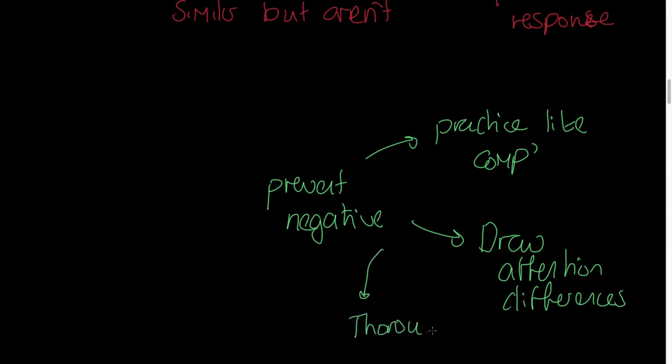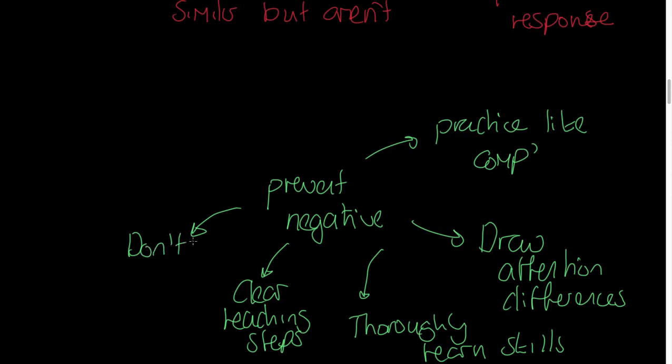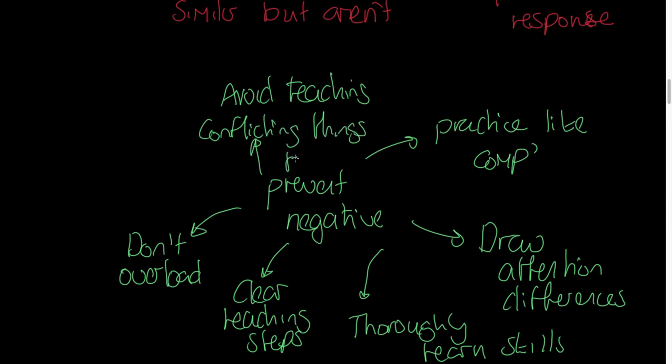We must thoroughly learn skills. There is a tendency in sports coaching that athletes will learn something, not master it, and we move on regardless. What we're saying here is before moving on, master the fundamentals. We also want clear teaching steps so that people can follow the path of progression simply, and it's absolutely clear what those progressions are. We don't overload our athletes. Don't give too much information or too much expectation all in one go. An example would be maybe two or three coaching points rather than ten in each occasion. We want to avoid teaching or coaching conflicting things together.